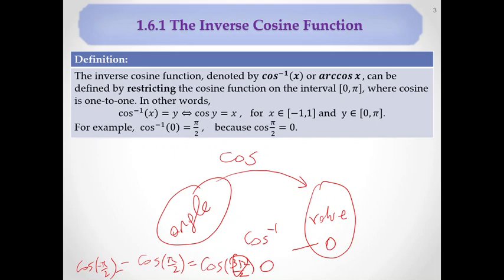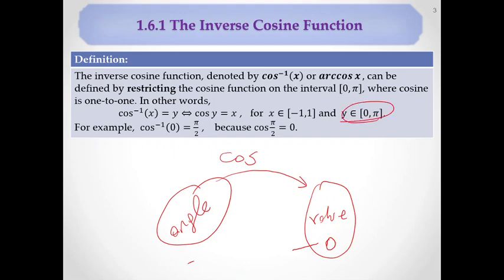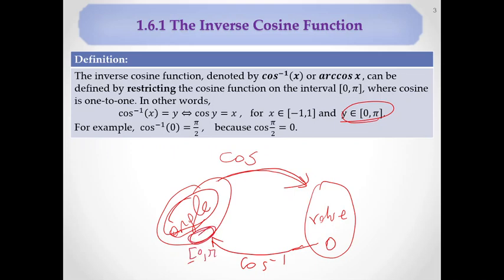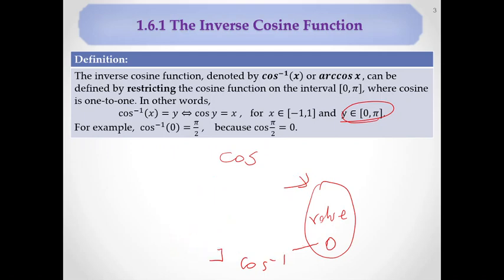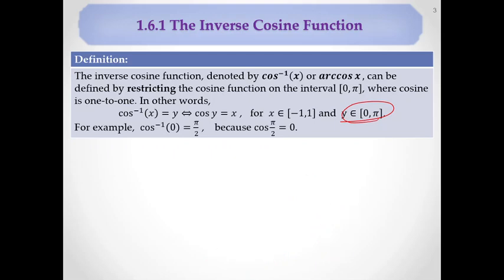The problem is cosine of pi over two is zero, but cosine of three pi over two is also zero, or cosine of minus pi over three is also equal to zero. When we choose an angle — which one will it be, pi over two or three pi over two? So when doing this, we restrict ourselves to angles between zero and pi to make it one-to-one.